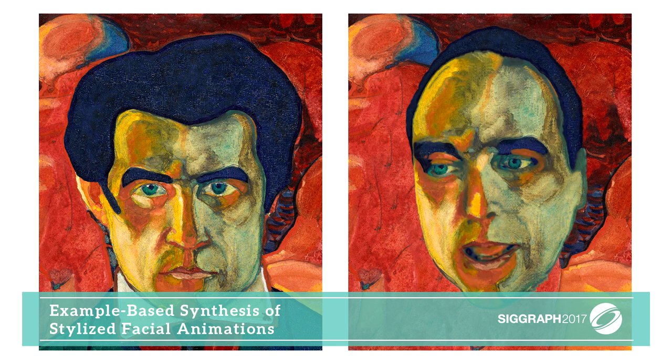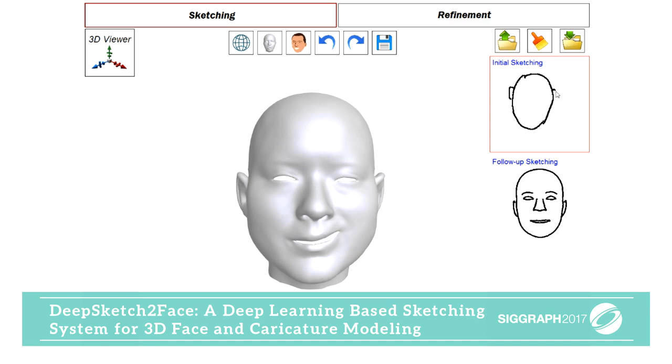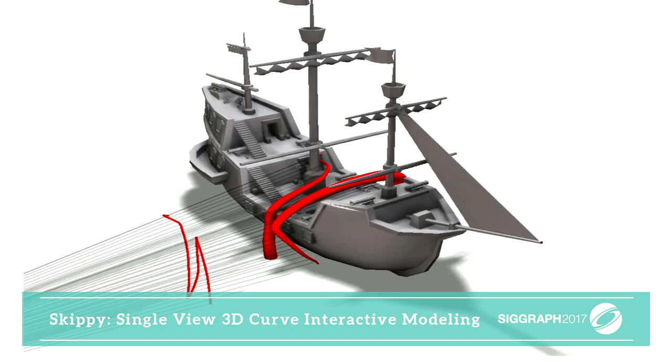This deep learning approach allows you to create a 3D model of a face by sketching the shape. And here, curves drawn in 2D pose a complex path in 3D, like those of the tentacles wrapping around this ship.